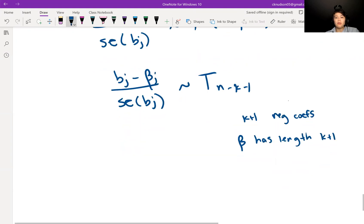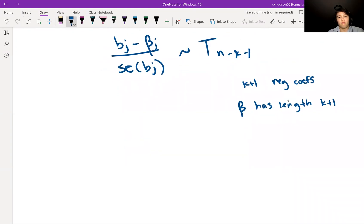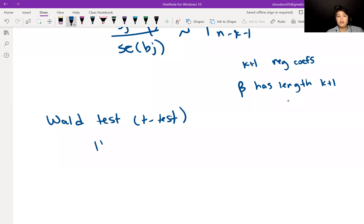We know that we need to use this as our test statistic. Our null hypothesis is that beta J is equal to zero and our alternative hypothesis is beta J is not equal to zero.